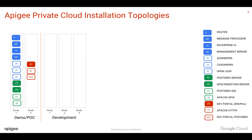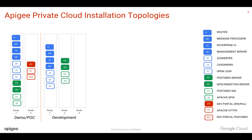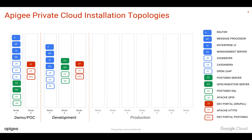If you are setting up Apigee for a development environment, you need at least three VMs or virtual machines — let's call them three nodes. On one node you will install all the Apigee Edge runtime as well as the management server. On another node you will install analytics, and on the third node you will install the developer portal.